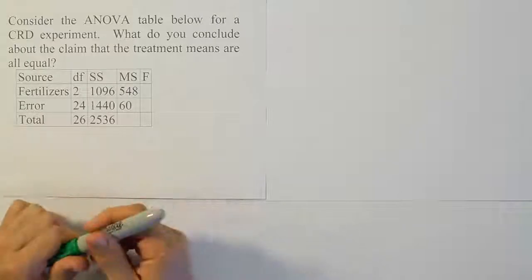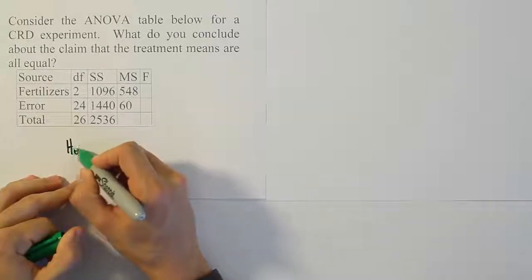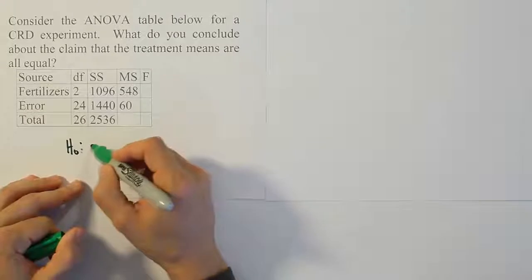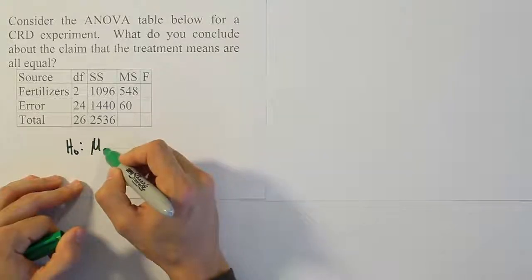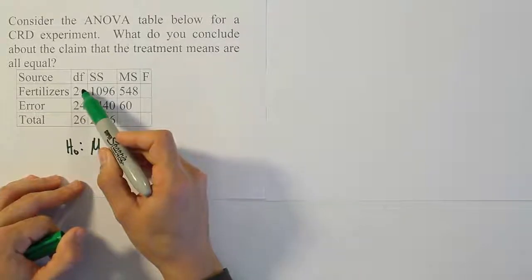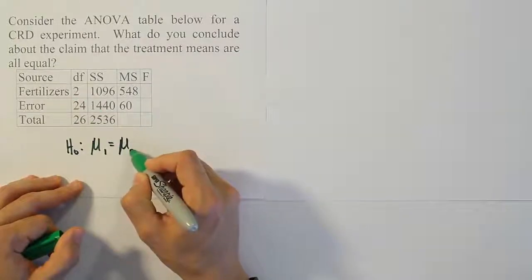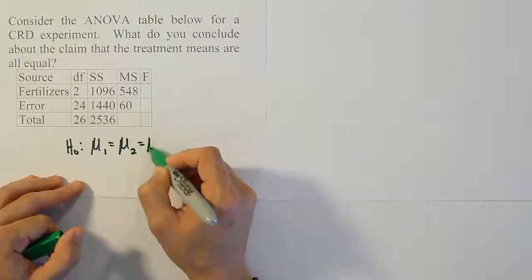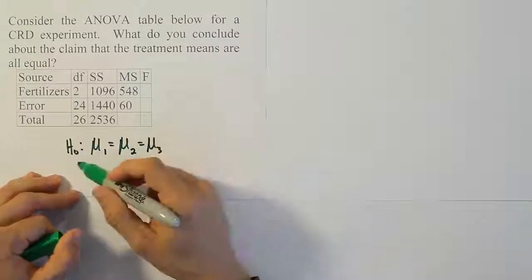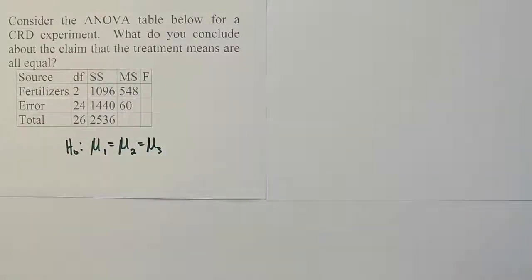So let's talk about H0 and HA typically in this problem. Typically we would have the idea that the means are all the same. I can see from the degrees of freedom that there must have been three fertilizers, so I'm going to use μ1 = μ2 = μ3 for our H0, and of course HA means that at least two of those differ significantly from one another.